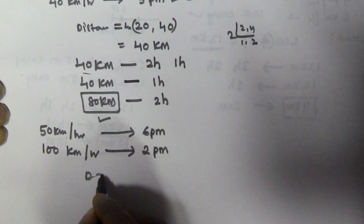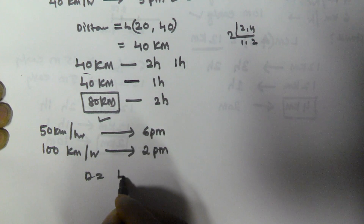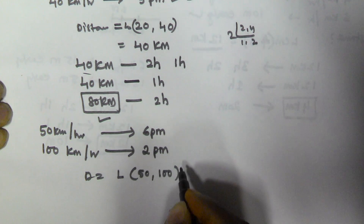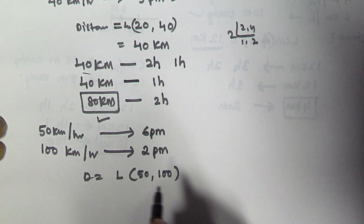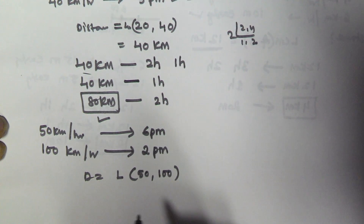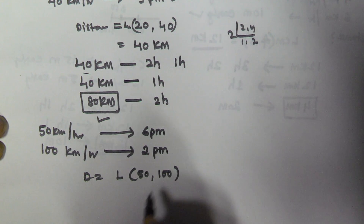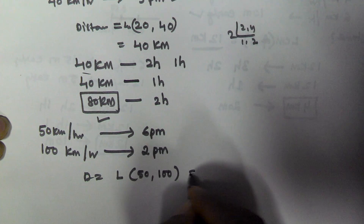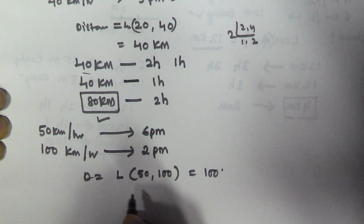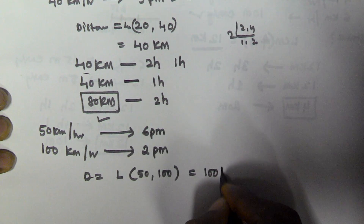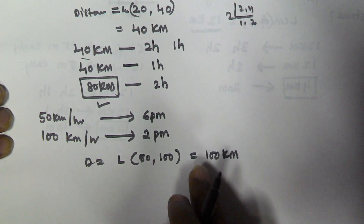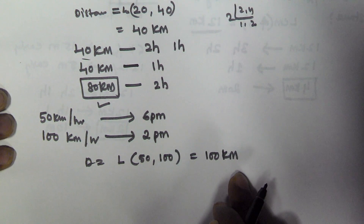Take the distance equal to the LCM of both speeds, 50 and 100. That is going to be 100. So the assumed distance is 100 km. If the distance between his home and office is 100 km...